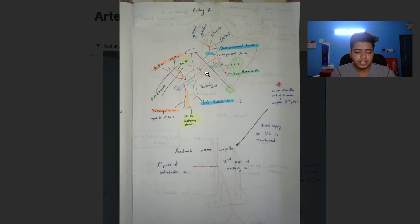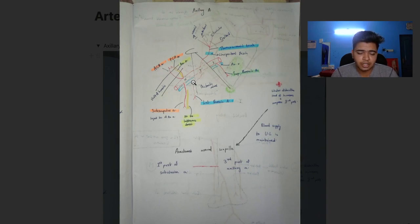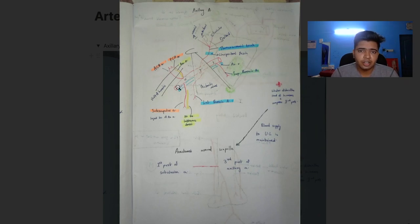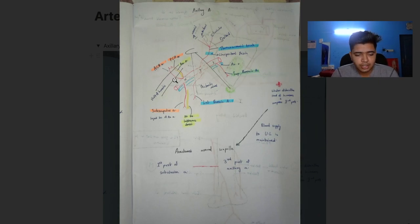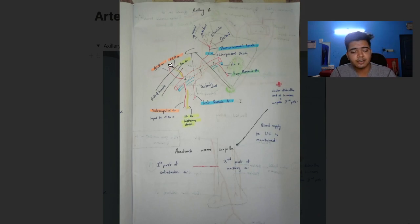Then we have the lateral thoracic artery which runs laterally to the pectoralis major. The third part has three branches, two of which surround the surgical neck of the humerus: the anterior circumflex humeral artery and the posterior circumflex humeral artery. These two wind around the shaft of the humerus and supply the bone.